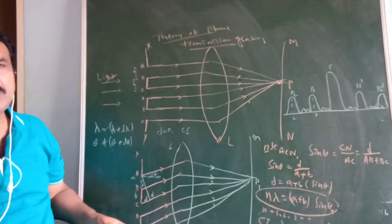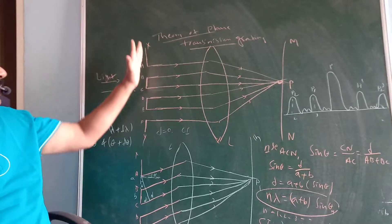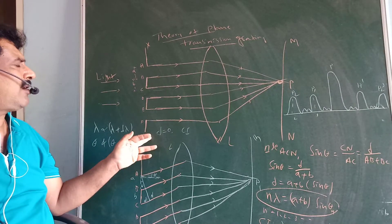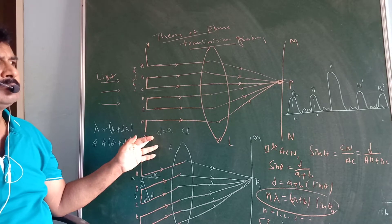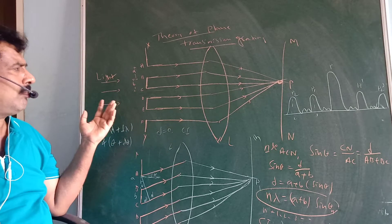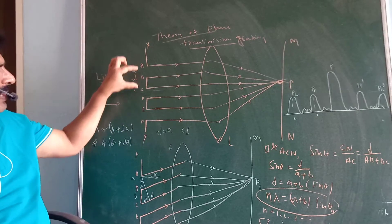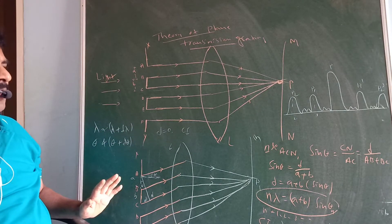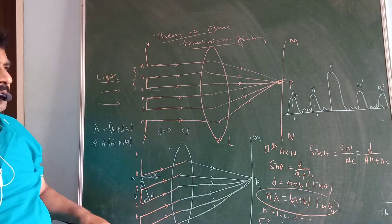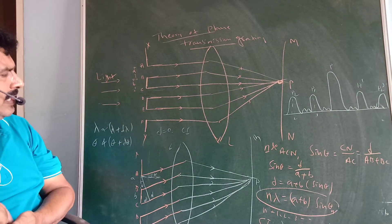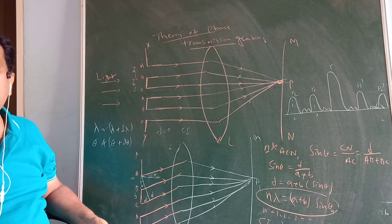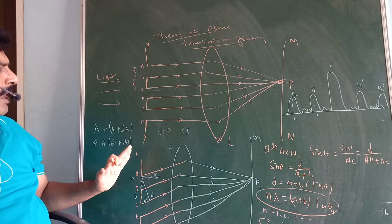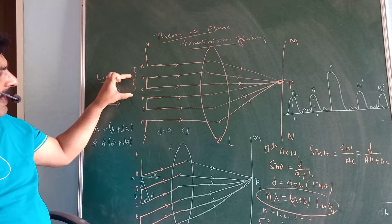Theory of Plane Transmission Grating. XY is the plane transmission grating having number of slits A, B, C, D, E, F, etc. Width of each slit is 'a'. A, B, C, D, etc. are the opaque parts of the grating and width of each opaque part is 'b'.